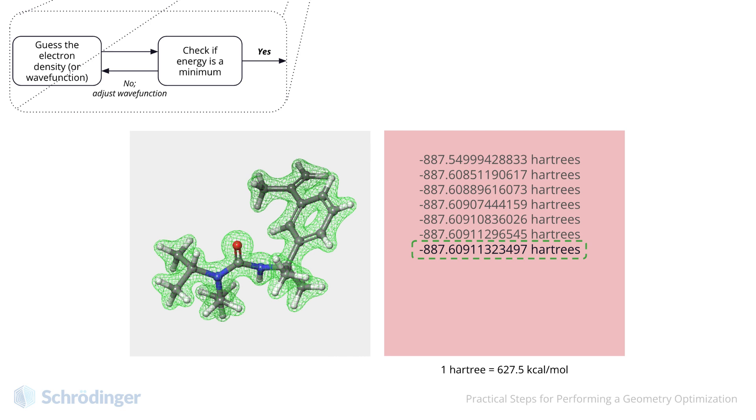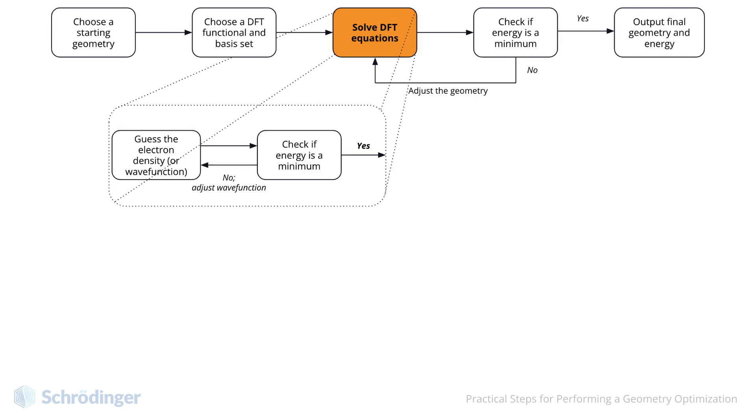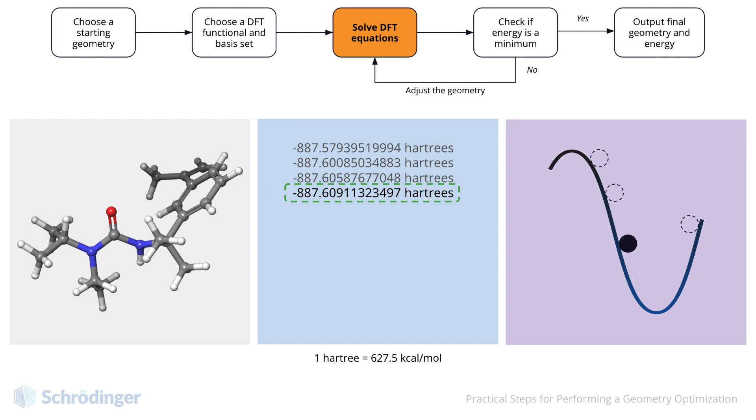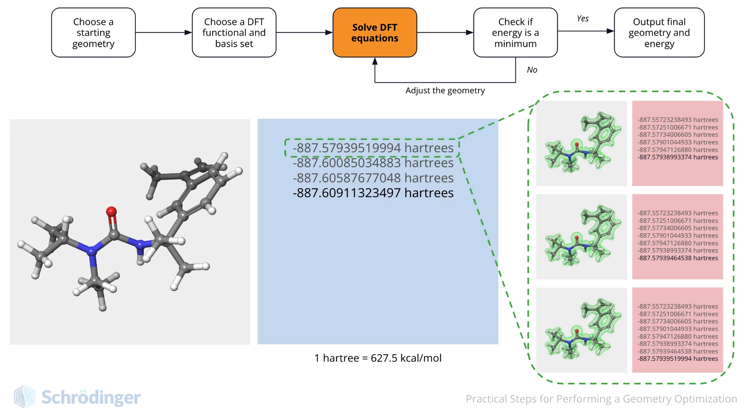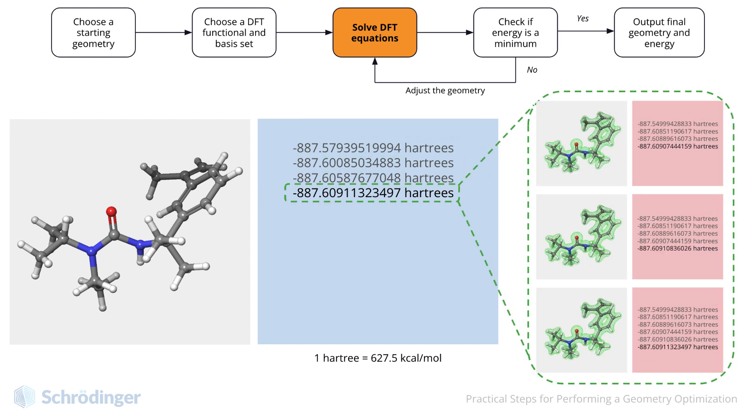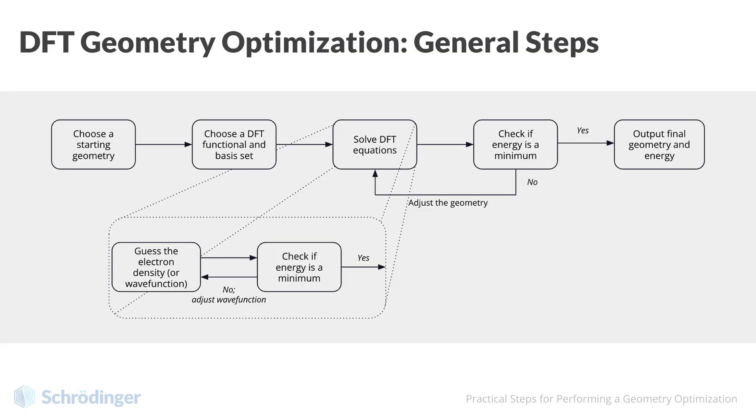We then solve the DFT equations iteratively until the energy no longer changes as we vary the electron density. In the context of a geometry optimization, once the DFT equations converge, the energy associated with that geometry is returned. That energy is the energy that we printed earlier for solving the DFT equations. And indeed, every single energy on that list was generated from a similar inner loop of holding that geometry constant and adjusting the electron density to achieve a minimum energy. And so, we can modify our full picture to also include this second inner iterative loop.